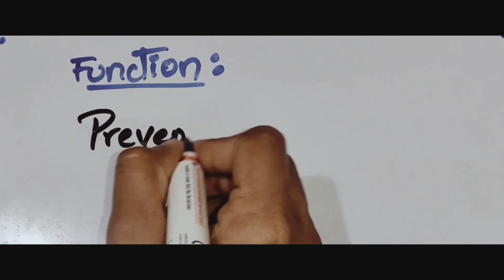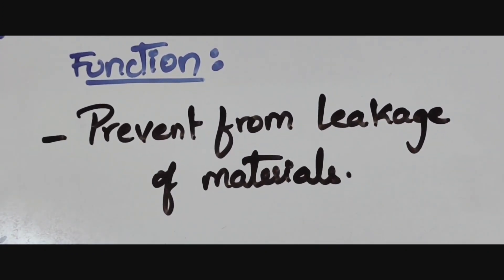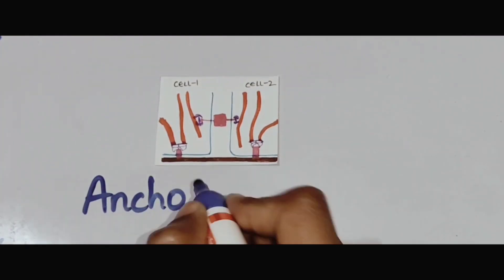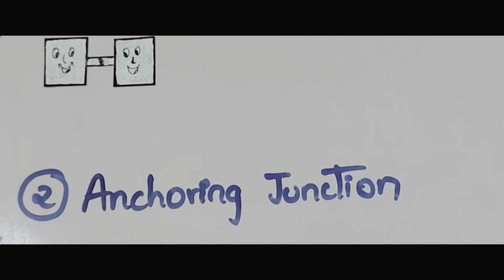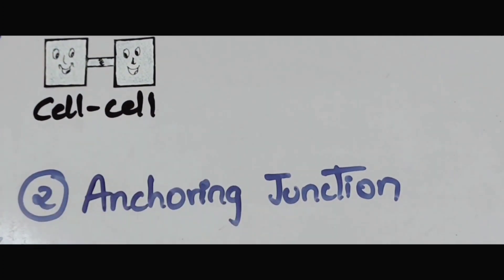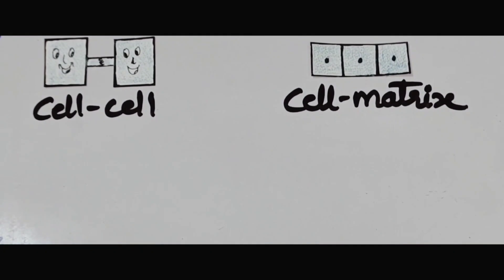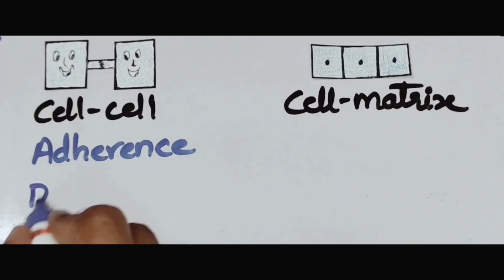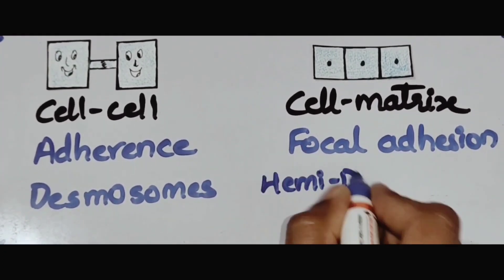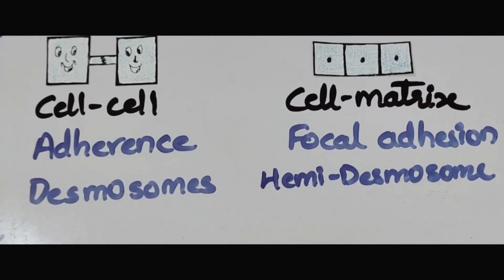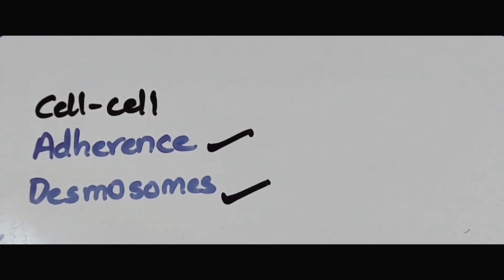The basic function of tight junctions is to prevent leakage of materials from the epithelial layer. Moving on to the second type — the anchoring junction. The term anchoring implies attachment. There are two different subtypes: cell-cell attachment and cell-extracellular matrix attachment. Cell-cell attachment includes two types: adherence junctions and desmosomes.